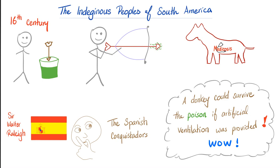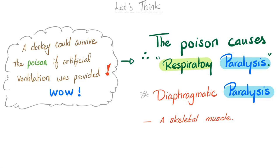Let me take you to the 16th century and the indigenous peoples of South America. One of the Spanish conquistadors, Sir Walter Raleigh, noticed that the native people dipped their arrows in some liquid, which would paralyze their prey. Something else was discovered: even a donkey could survive the poison if artificial ventilation was provided. This means the poison causes respiratory or diaphragmatic paralysis — the diaphragm is a skeletal muscle — so this poison is a skeletal muscle relaxant, a neuromuscular blocker.